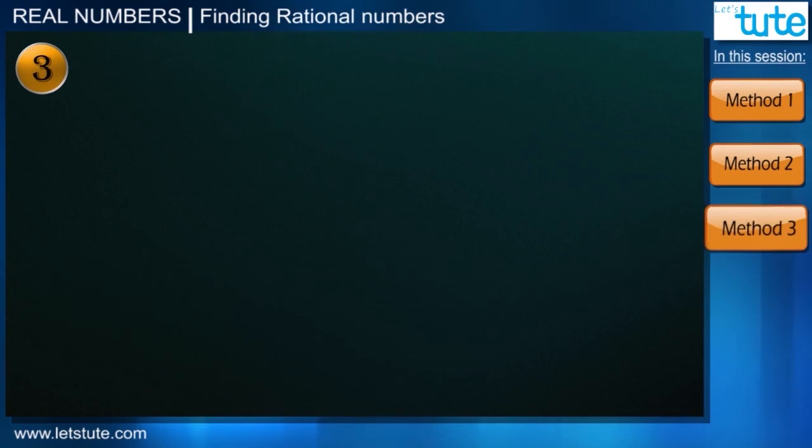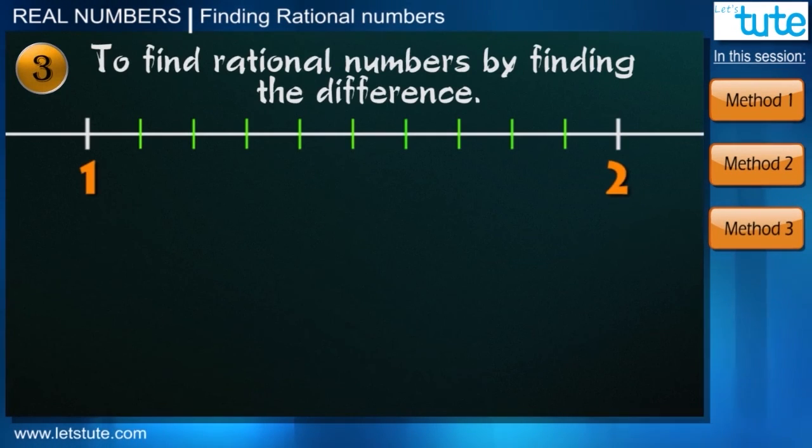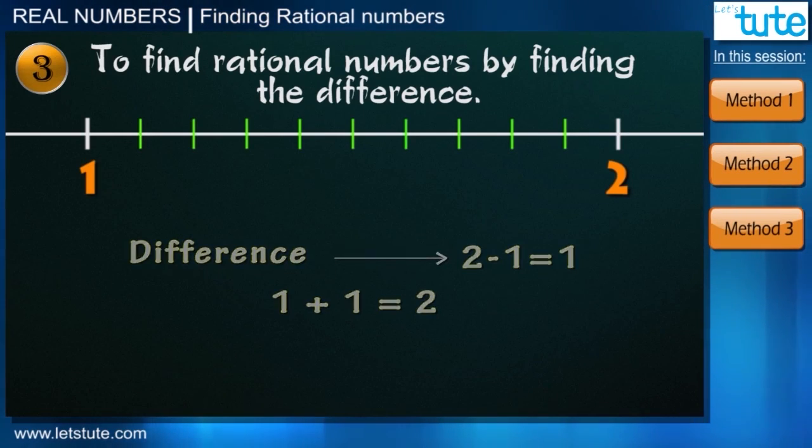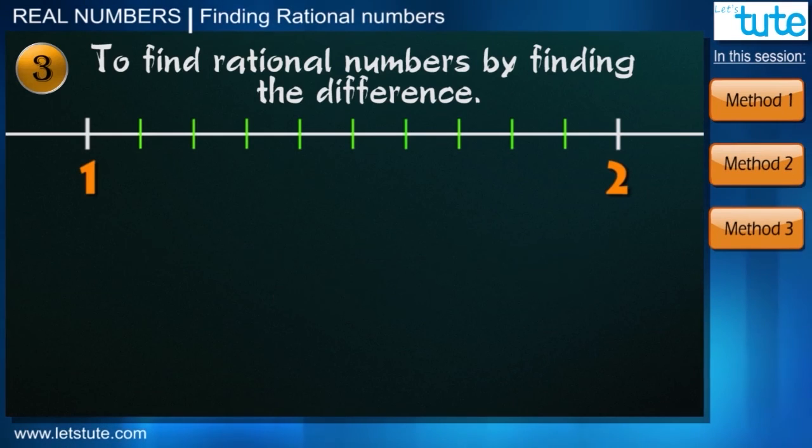Friends for integers we have one more easy way. So let's take the integers 1 and 2. Here we'll first find the difference between 1 and 2 which is 1 and we know that adding 1 to 1 we can directly get 2. This means that if we add all the numbers which are less than 1 to 1 then that numbers would lie between 1 and 2 right.